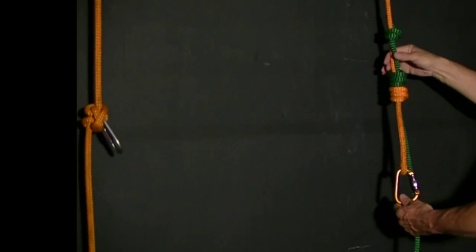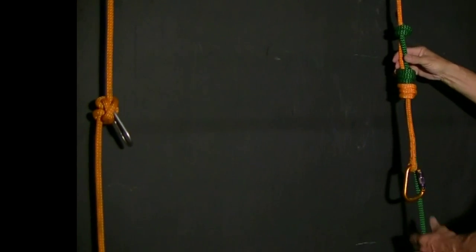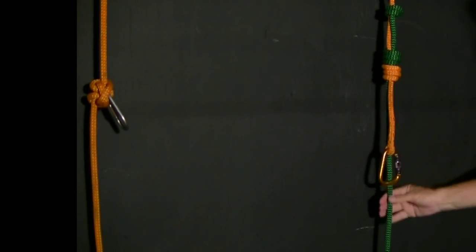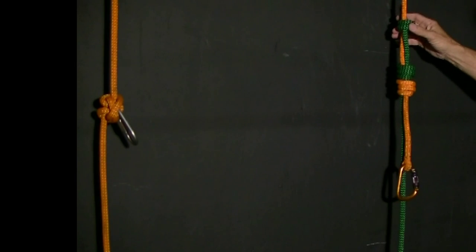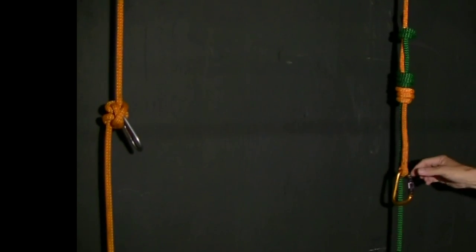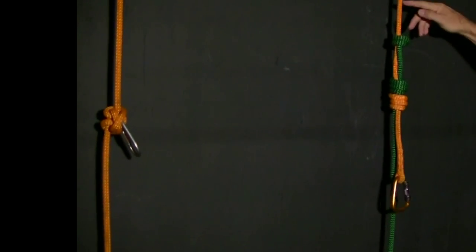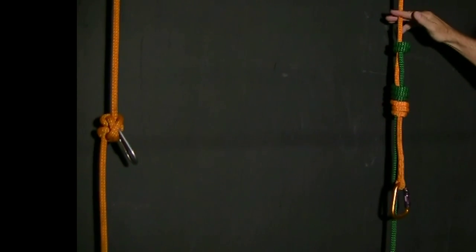This is a triple double fisherman's knot with a spliced end and carabiner. That makes it really nice when you're putting ropes together for a long ascent. You have the carabiner to tie off on while you're making your changeover passing the knot.